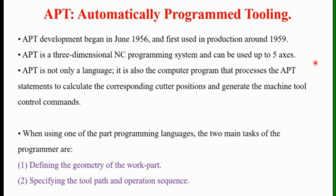We will not consider the internal workings of the computer program; instead, we will concentrate on the language that the programmer must use. APT is a 3-dimensional NC programming system and can be used up to 5 axes. Automatically Programmed Tooling is also a Computer Program that processes APT Statements, calculates corresponding Cutter Positions, and generates Machine Tool Control Commands, controlling the Machine Tool Path as well.